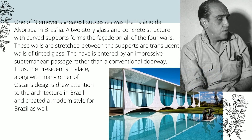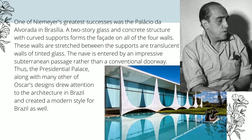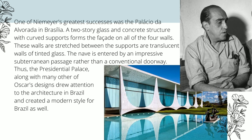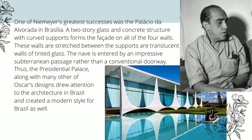One of his greatest successes was the Palacio da Alvorada in Brasilia, a two-storey glass and concrete structure with curved supports forming the facade on all four walls. The walls stretched between the supports are translucent walls of tinted glass. The nave is entered by an impressive subterranean passage rather than a conventional doorway. Thus, the Presidential Palace, along with many other of Oscar's designs, drew attention to the architecture of Brazil and created a modern style for the country.